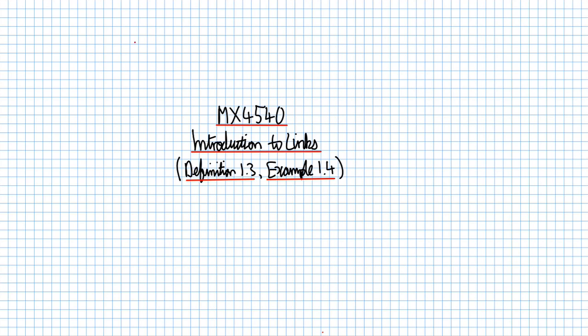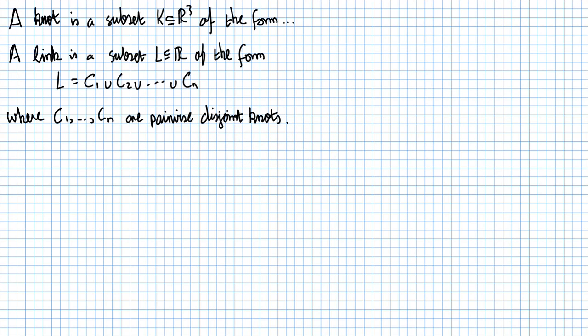So let's talk about the definition of link. The bad news is that you need to remember what a knot is. So let's recall that a knot is a subset K inside R³ of the form something. And if you don't recall what form a knot has to have, please go back and have a look in Definition 1.1.